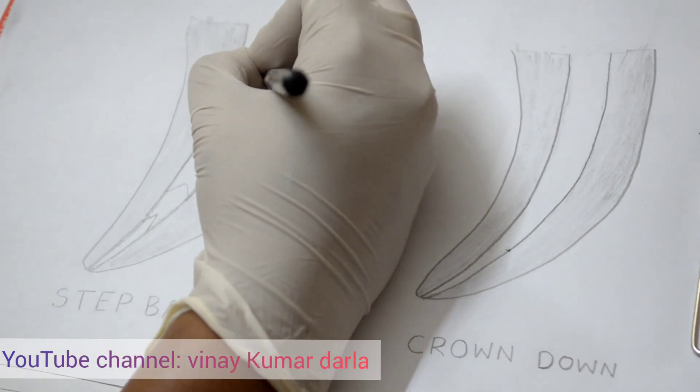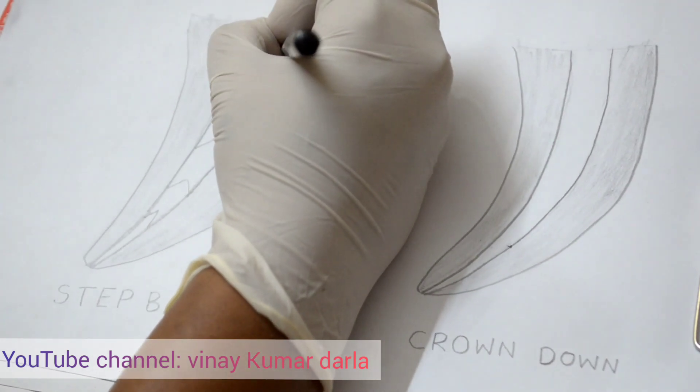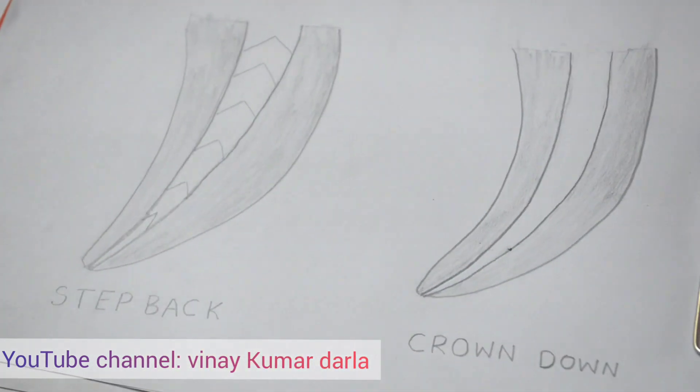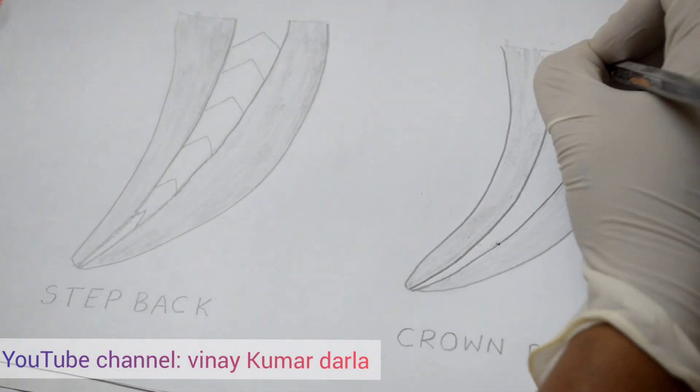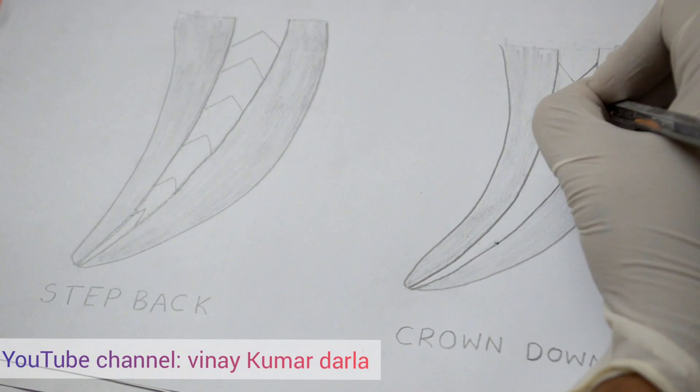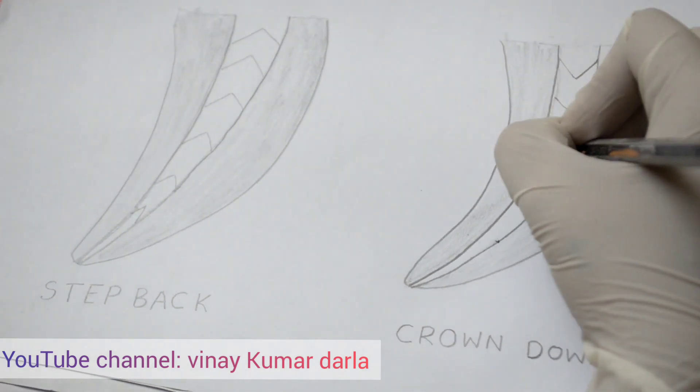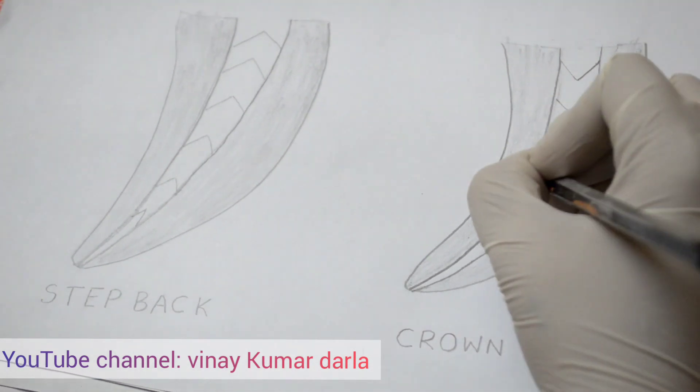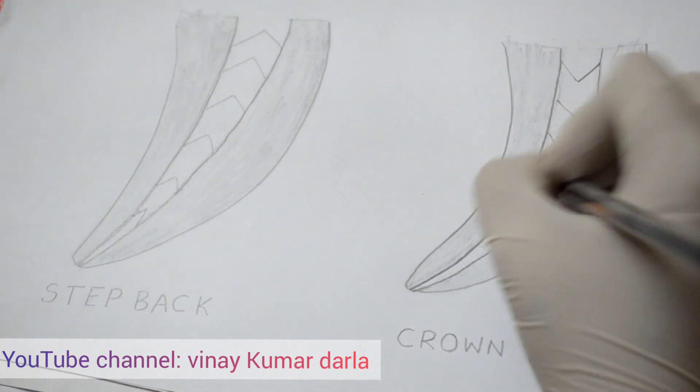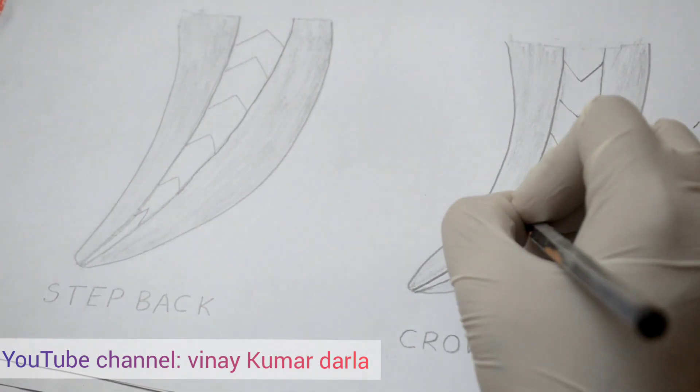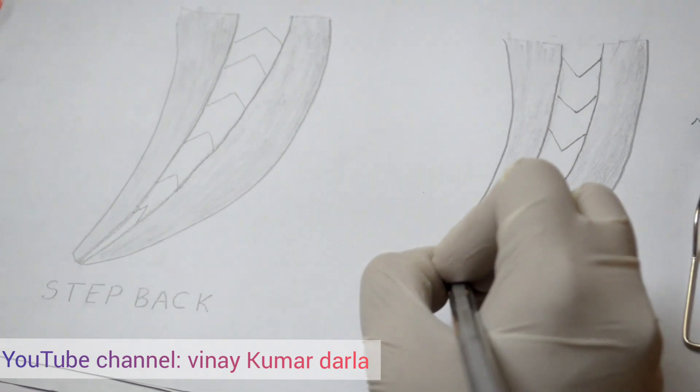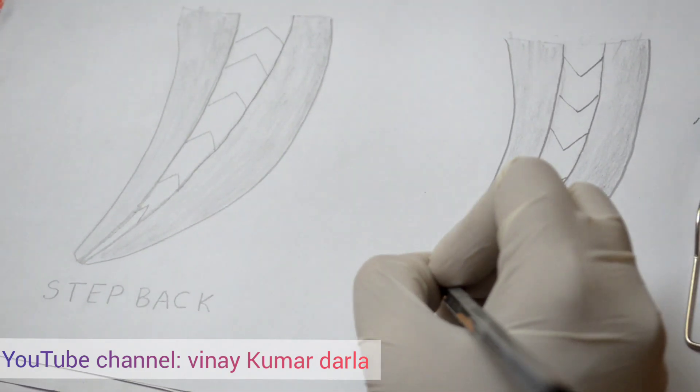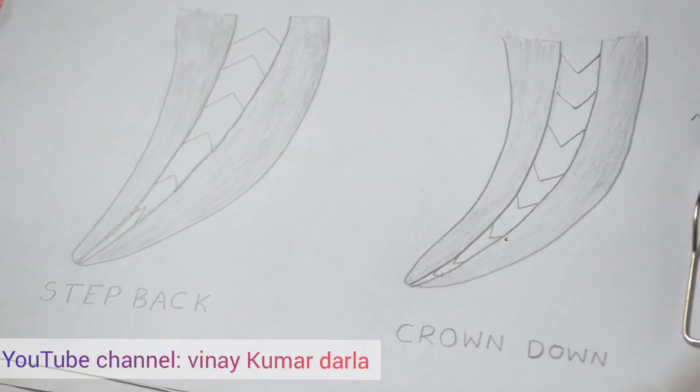Advantages of crown down technique over step back technique: The debris extrusion is minimized, thereby post-operative discomfort is reduced. Crown down technique allows better penetration of the irrigants. Furthermore, crown down technique offers better control over the apical enlargement preventing mishaps. Working length is less likely to change with this technique.